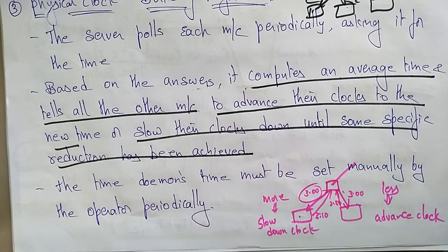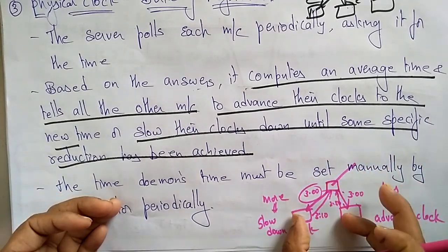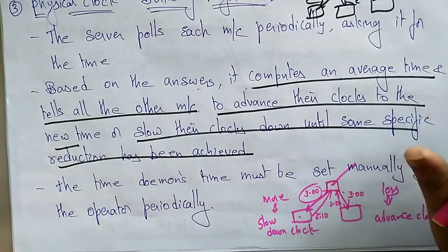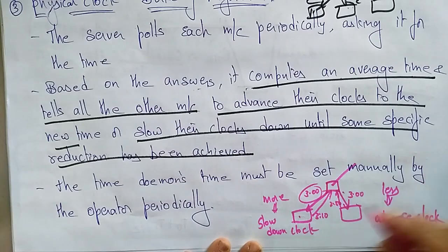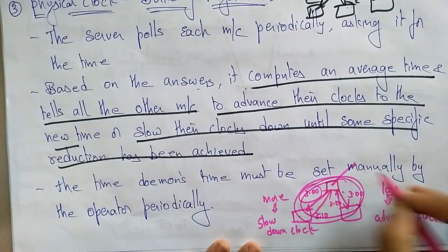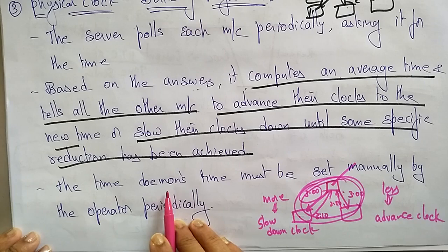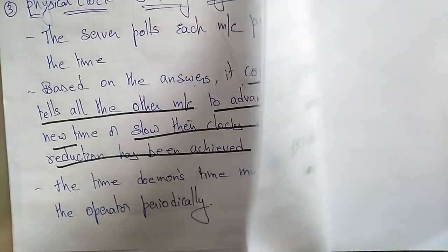Until some specific reduction is achieved — every system has to be synchronized. The master clock is also not fixed, so all systems need to communicate with each other. Every system may need to increase or decrease its time, and the time daemon's time must be set manually by the operator periodically.